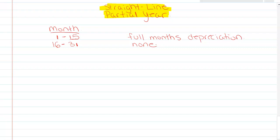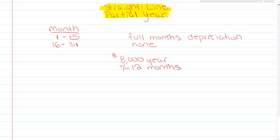So I just want to compare and contrast what this looks like. If we take into consideration that van that was $8,000 per year, and divide that by 12 to see what this is per month, that comes out to $667 per month.